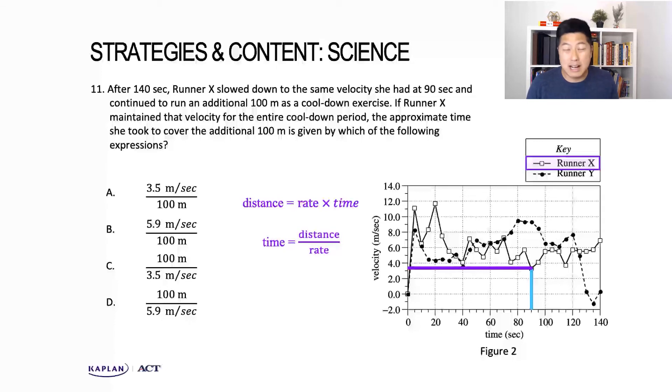That works out because we have the distance and the rate. The distance is the additional 100 meters that runner X will run, and the rate is the speed at the 90-second mark, which was 3.5 meters per second. So we've got time equals 100 over 3.5, which absolutely matches answer choice C, our answer.